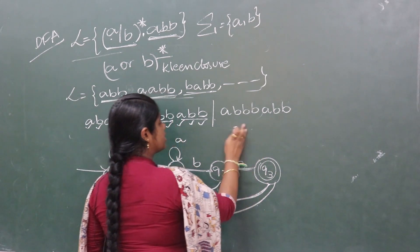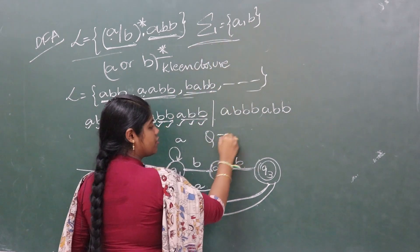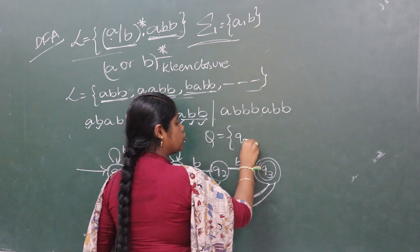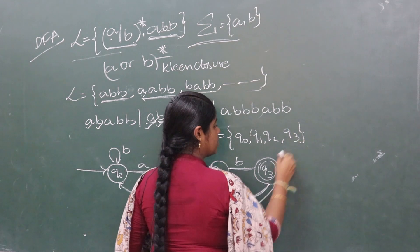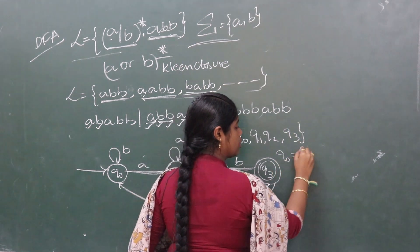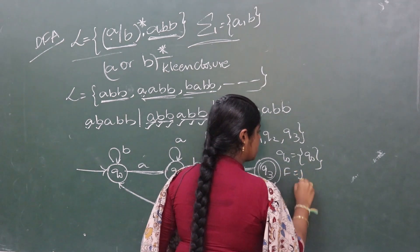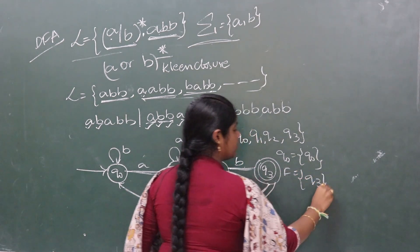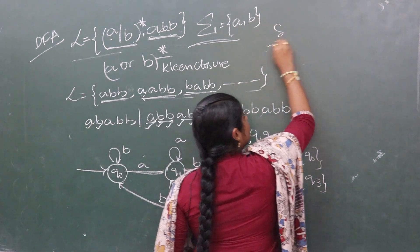Now, sigma is the set {A, B}. The states obtained are Q0, Q1, Q2, and Q3. The starting state is Q0. Next, we need to construct the transition function, delta.